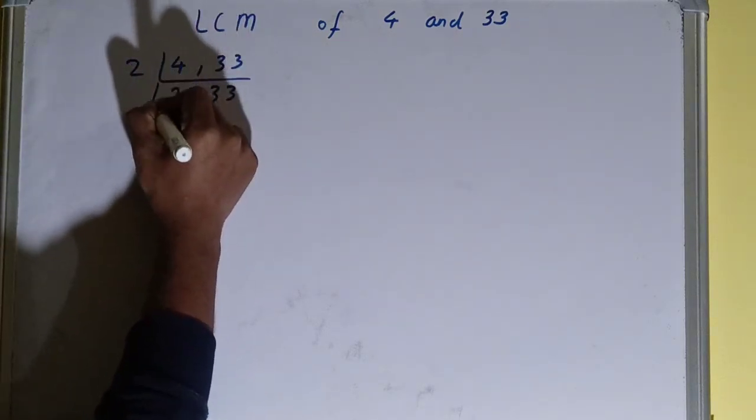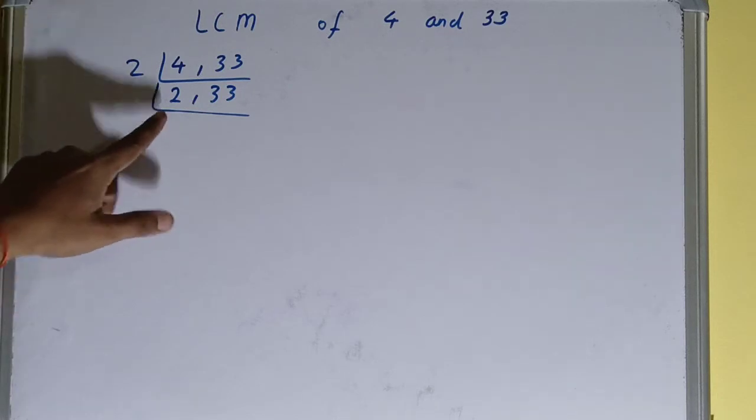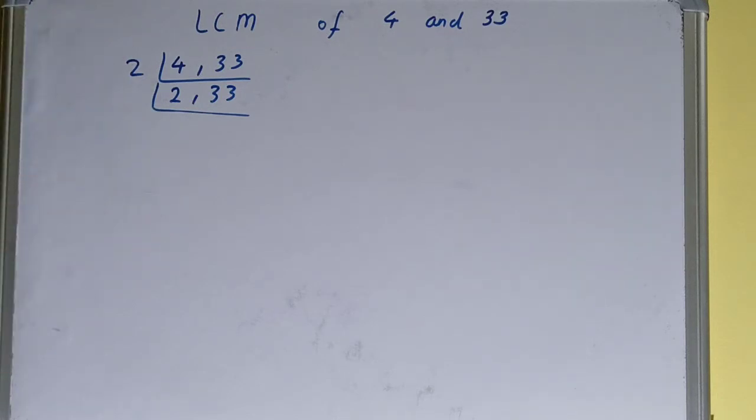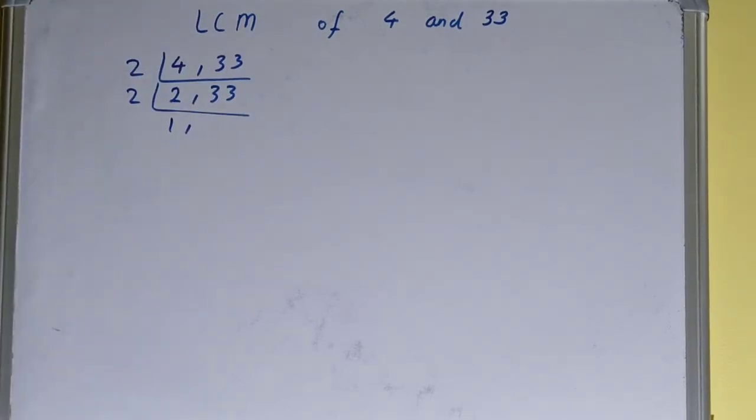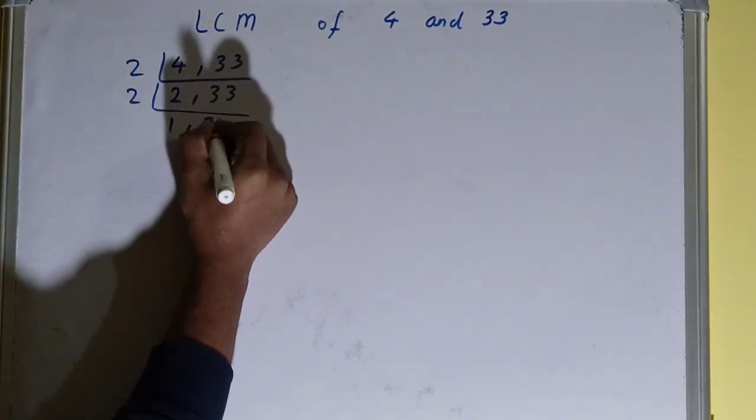Now again, if you see, this number 2 is divisible by 2, so divide it. We'll be getting 1. But this 33 is not divisible by 2, so we'll leave it like that, we'll not touch it.